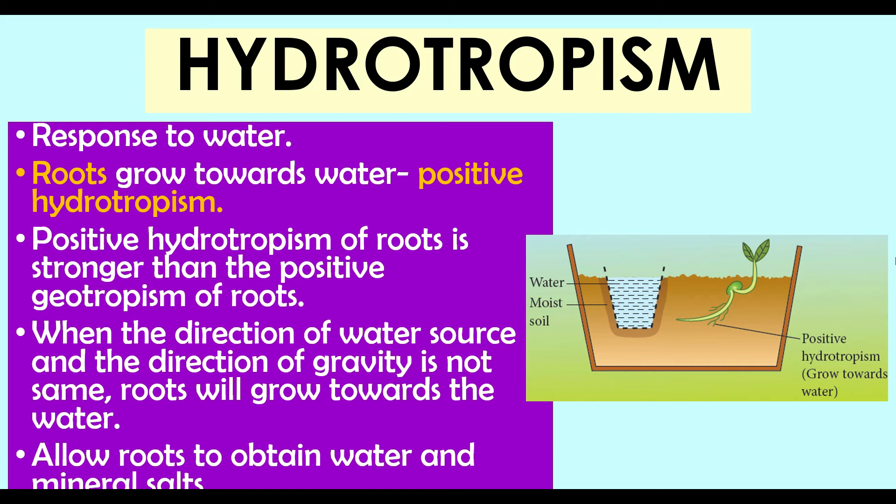Thus, roots can grow sideways or upwards in the direction of a water source, ignoring the pull of gravity. Shoots, on the other hand, grow away from water and are said to show negative hydrotropism.